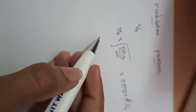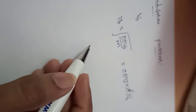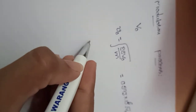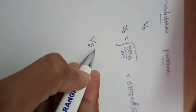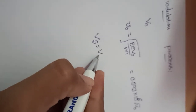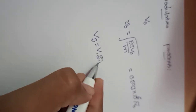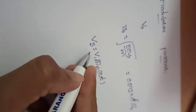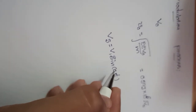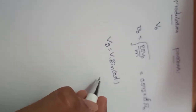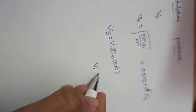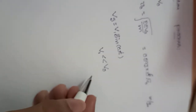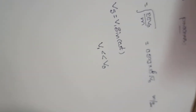We apply an RF input signal at the buncher cavity. The voltage of the RF signal is assumed as Vs = V1 sin(ωt). Generally, the voltage of the RF signal is very, very much less than the DC voltage applied at the cavity.